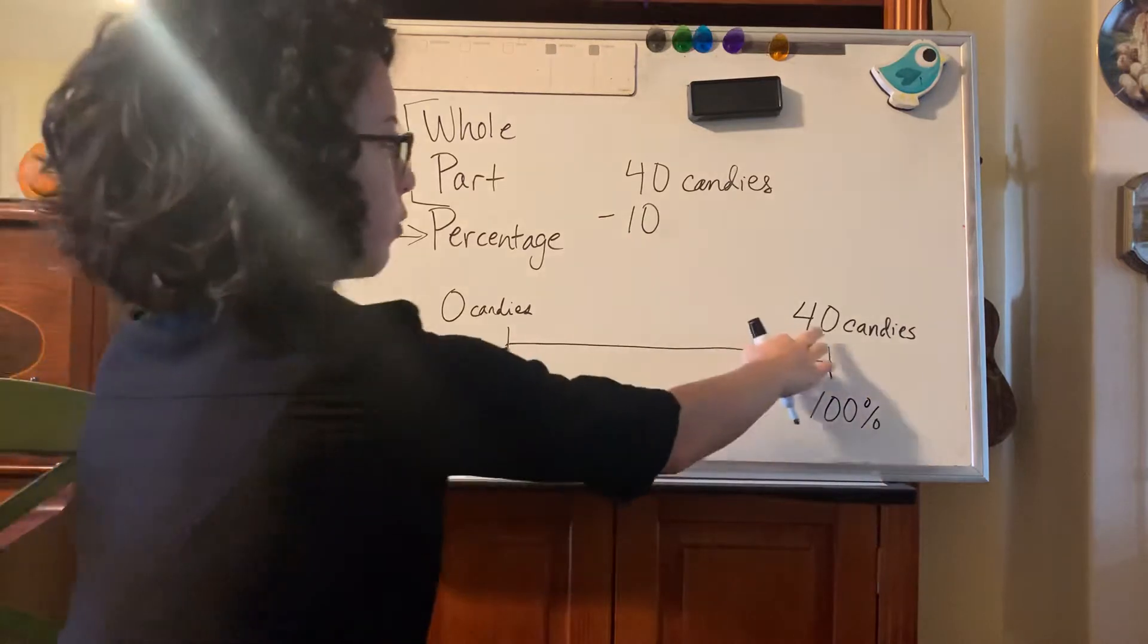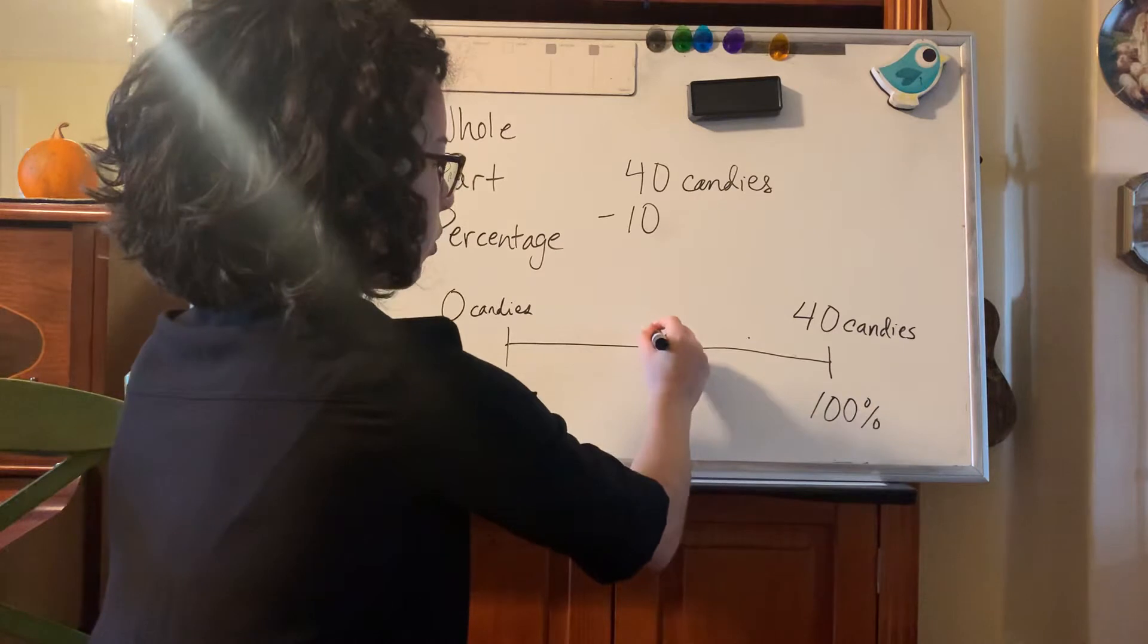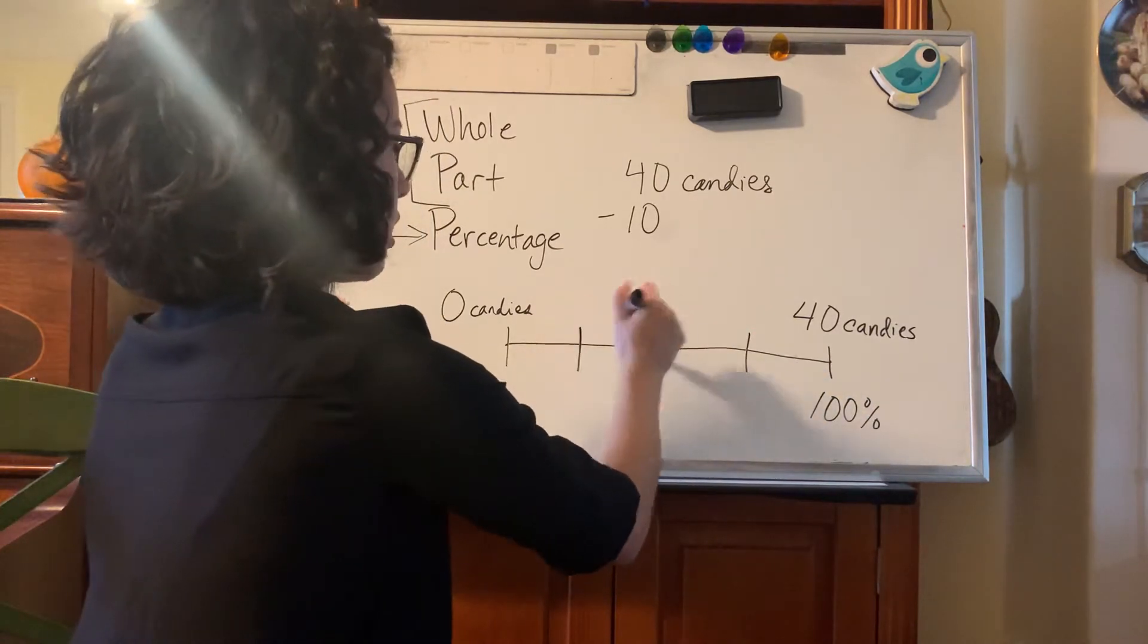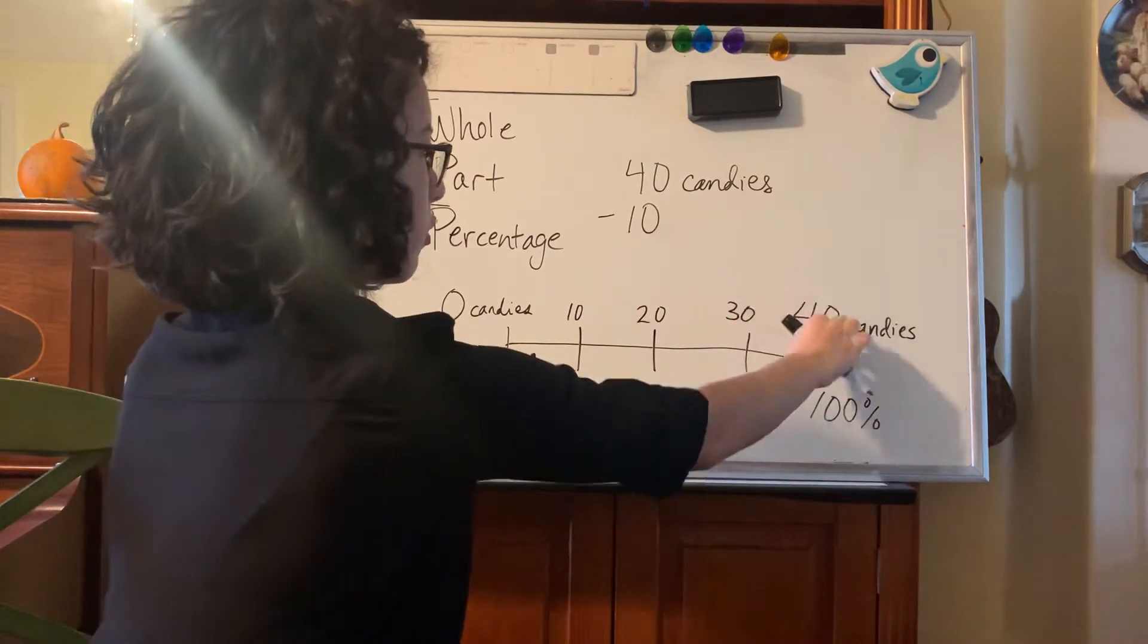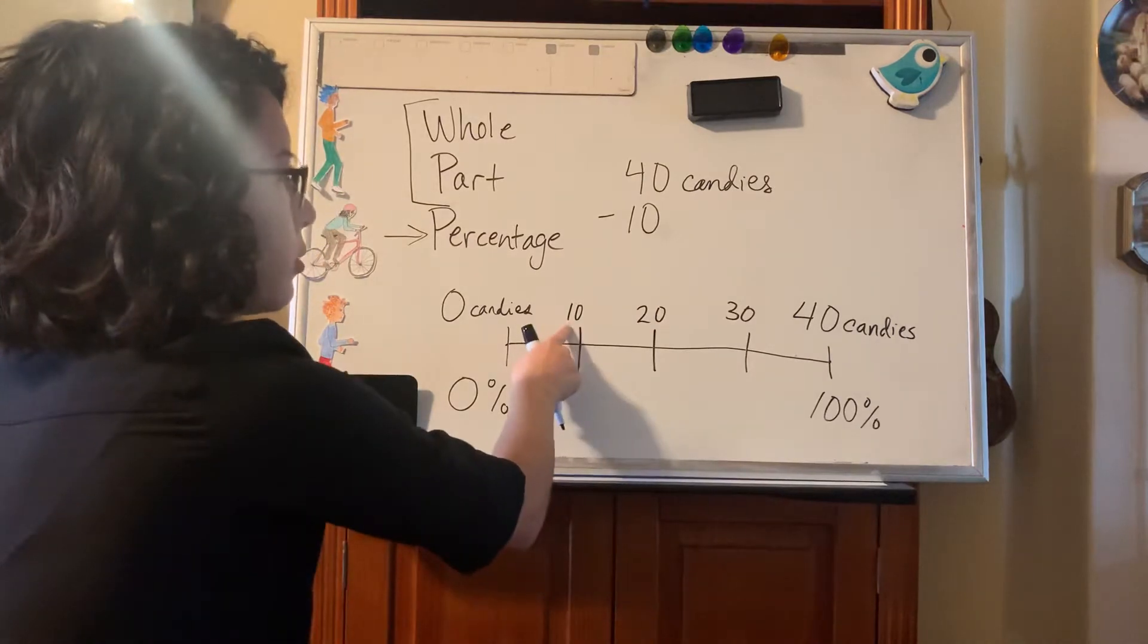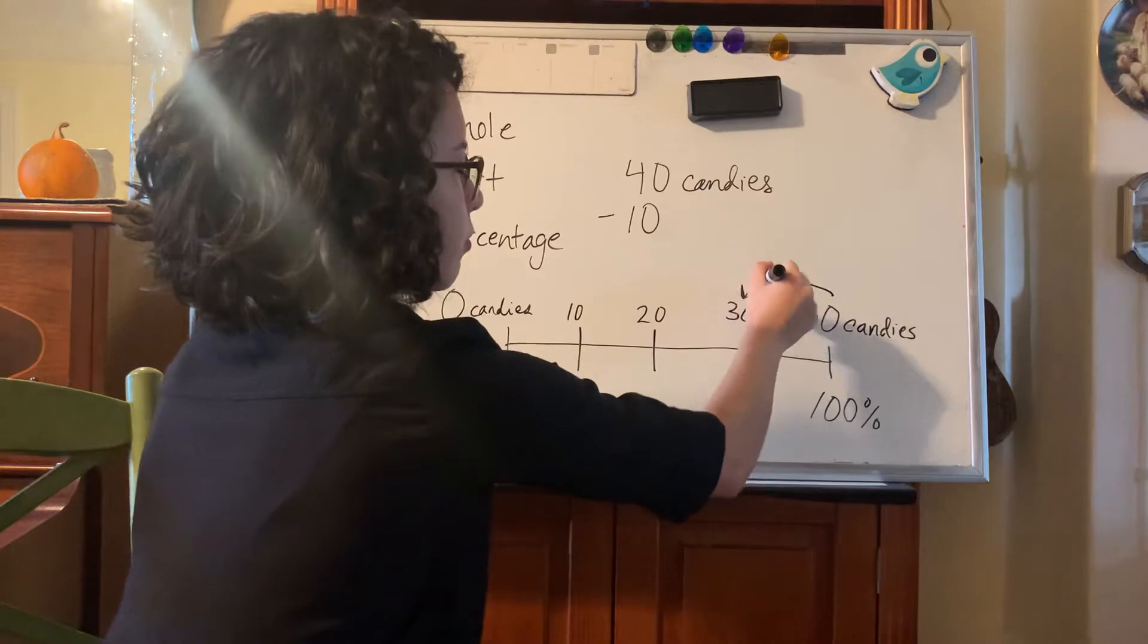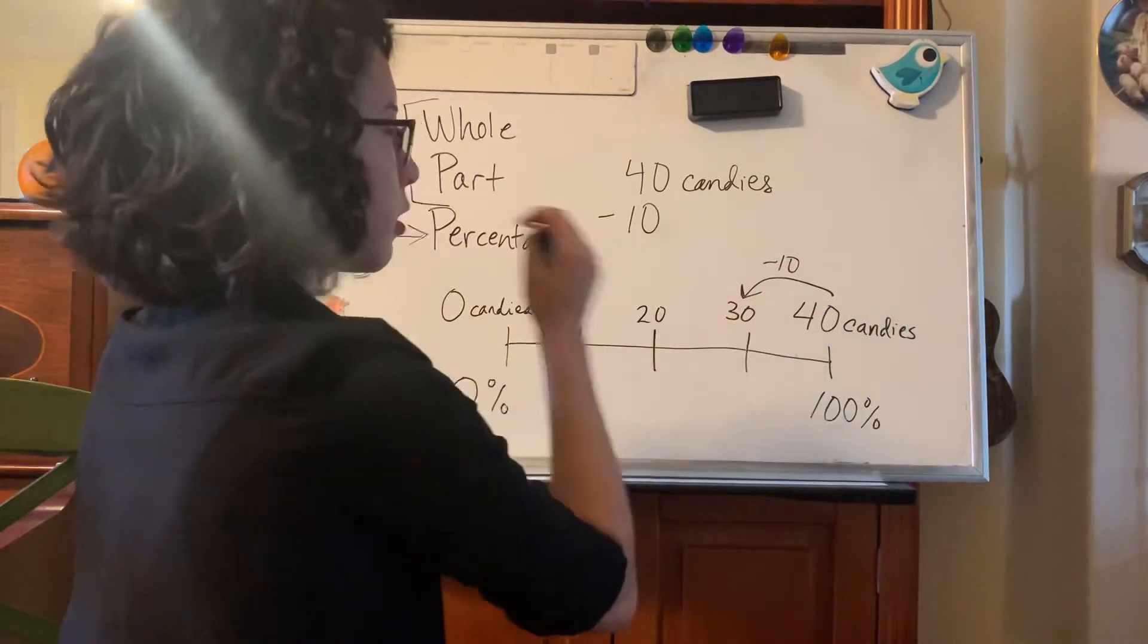So let's see, 40 candies, we know she's going to eat 10 of them. So we'll break this 40 into four parts. So we know each of these is 10. 10, 20, 30, 40. Now if she's eaten 10, we're not going to use this 10 over here. We're going to go back from 40. She's eaten 10. Now she's at 30 candies.